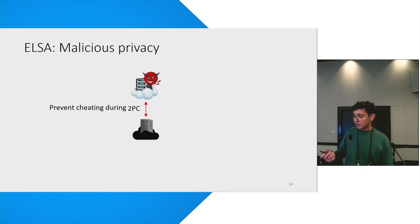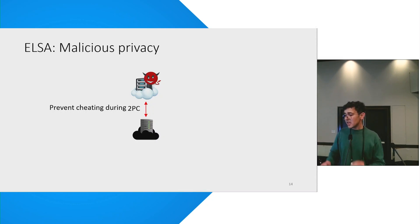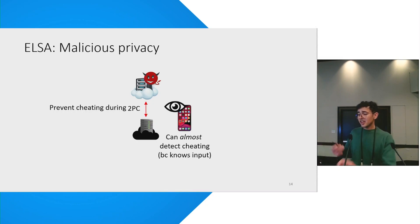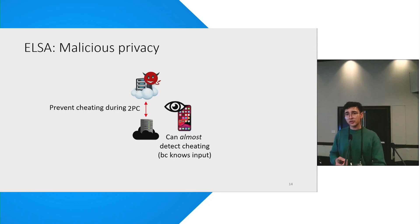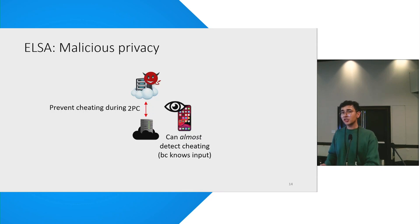Let me talk at a high level about how it works. We have two servers, one of them can be malicious, and we want the honest server to be able to detect whenever the malicious server cheats. Our main insight is that the 2PC happening between the servers uses inputs that the client already knows — it's the client's own inputs. So if we somehow allow the client to look at the interactions between the servers, then the client can almost already detect a cheating server.